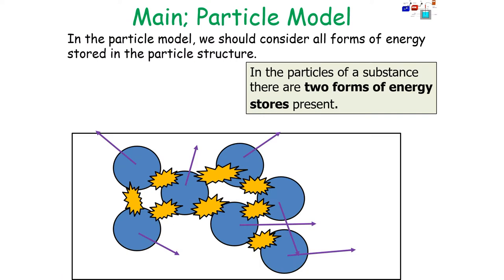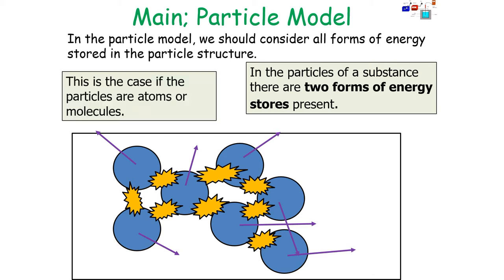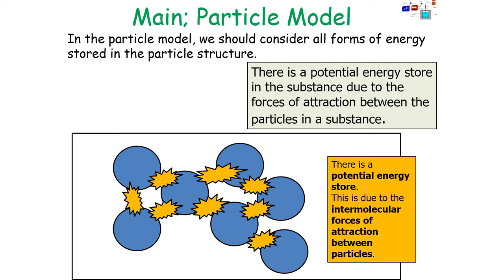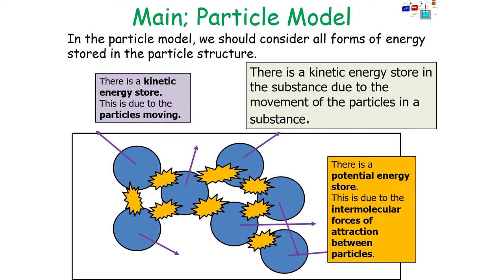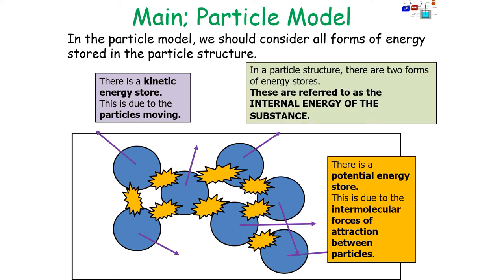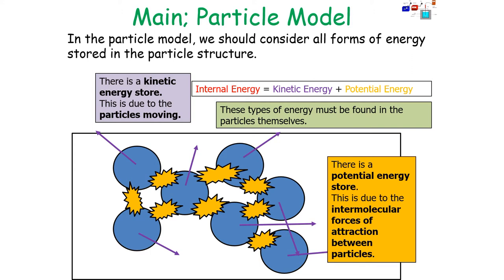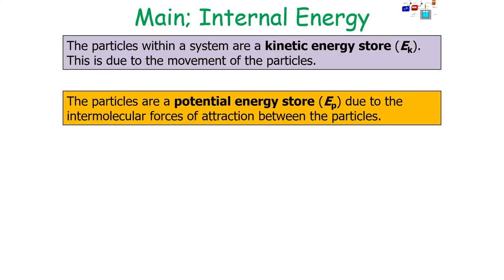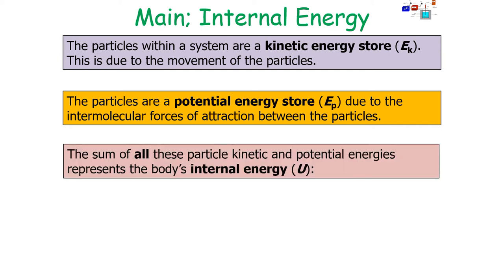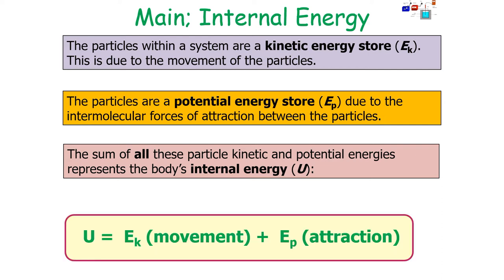In the particle model, you should always consider all forms of energy stored in the structure. In the particles of a substance there are two forms of energy: the potential energy store, due to the intermolecular forces of attraction between the particles, and the kinetic energy store, due to the movement of the particles. Together these are referred to as the internal energy of the substance. So internal energy equals kinetic energy plus potential energy of all the particles in the substance.